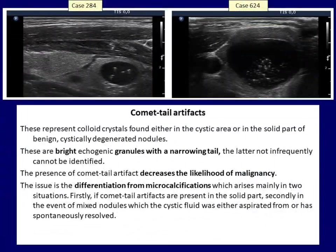Here is the second most important figure which might mimic micro-calcification. The cometary artifacts represent colloid crystals and therefore must be present only in thyroid cysts, namely in benign ones. Colloid crystals secede from over-saturated colloid jelly. The typical presentation of a cometary artifact — the echogenic granule with a dorsal tail in a cystic area — causes no problem. Unfortunately, these figures frequently lack the dorsal tail. The concern is raised when the investigator misses the opportunity that a seemingly solid nodule could be a former cystic one.